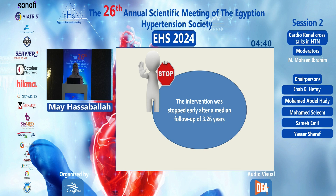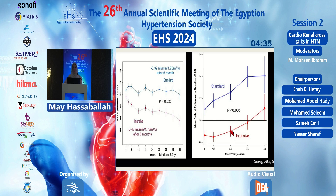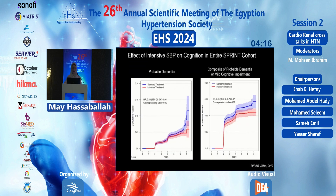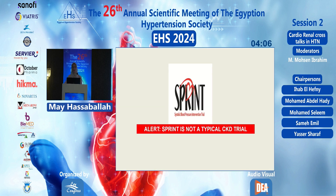The trial was stopped early after a median follow-up of 3.26 years due to significant benefit in the primary outcome and heart failure. There was no significant difference in GFR between intensive and standard groups, though there was some decrease in proteinuria in the intensive arm — though it is unclear whether this will translate into long-term GFR benefit. There was also improvement in cognitive function and reduction in probable dementia.